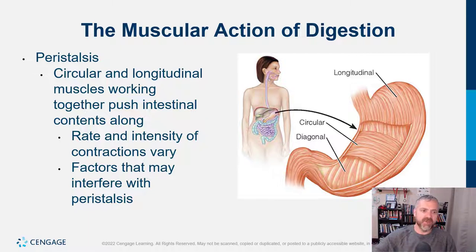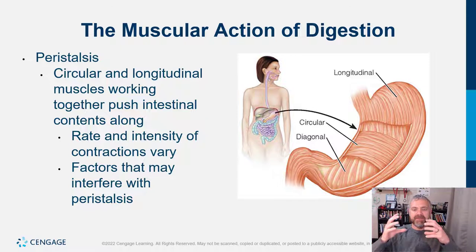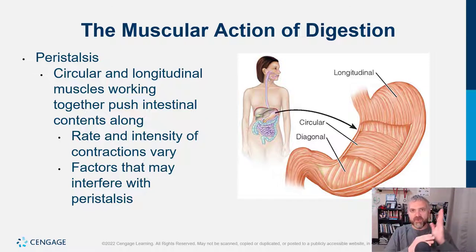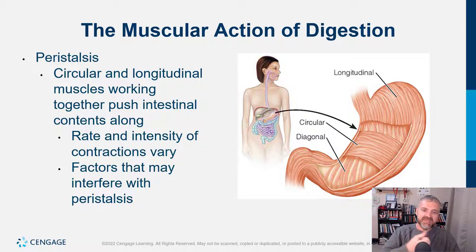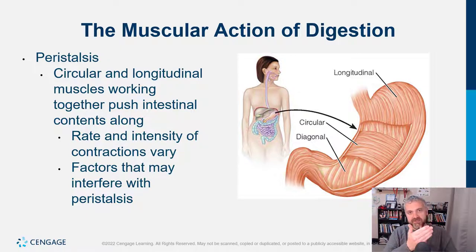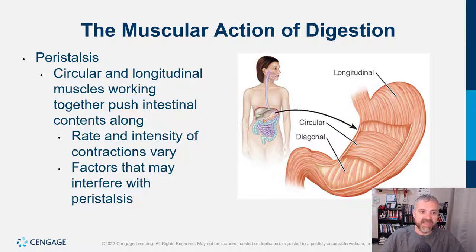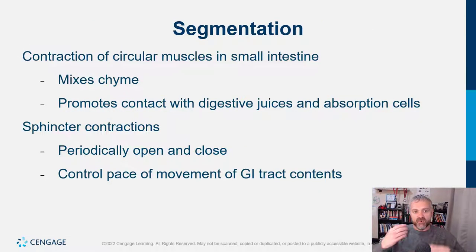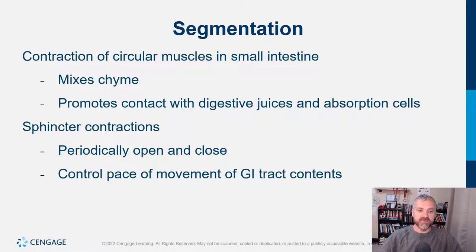Peristalsis: the multiple layers of smooth muscle squeeze material from one location to another — imagine squeezing the bottom of a tube of toothpaste, forcing it in one direction. Segmentation is more of a churning action that mixes things together.